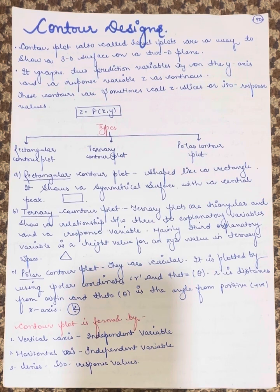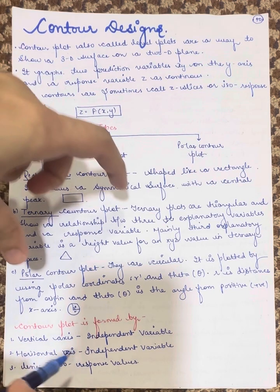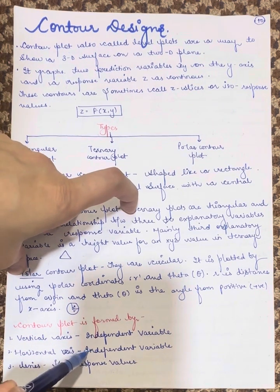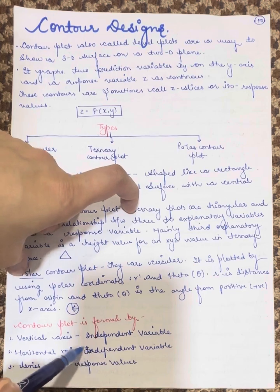The contour plot is formed by a vertical axis having the independent variable, a horizontal axis having the independent variable, and lines having iso response values. The horizontal values represent the dependent variable.